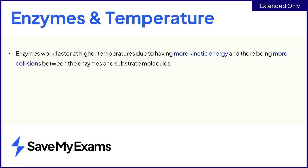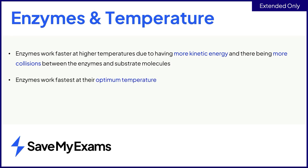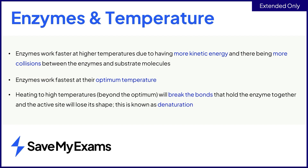In summary, enzyme action increases with temperature due to increased kinetic energy, more frequent collisions between the enzyme and substrate molecules, and more enzyme-substrate complexes forming. The temperature at which the enzyme works the fastest is called the optimum temperature. If the temperature increases too far above the optimum, the bonds holding the enzyme's shape together can break, causing the enzyme to become denatured and the active site to lose its shape. This stops the reaction from taking place.